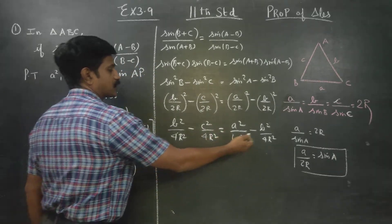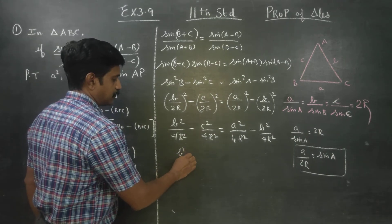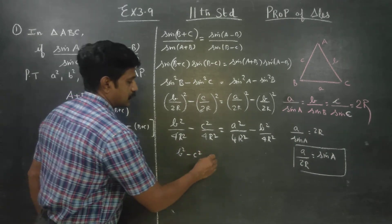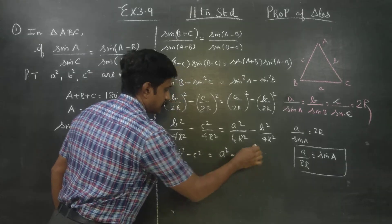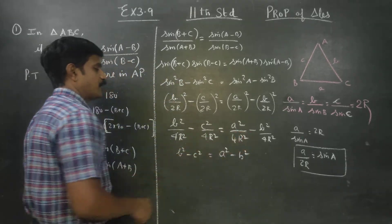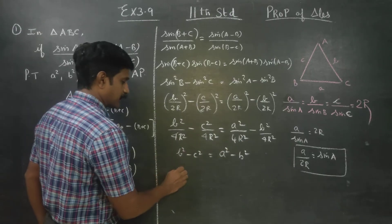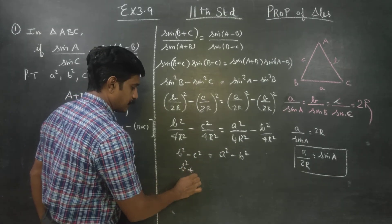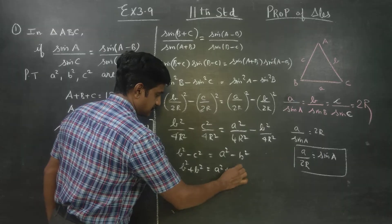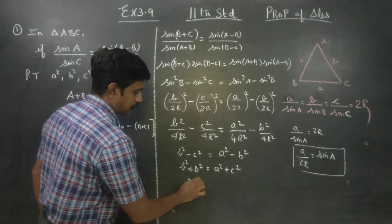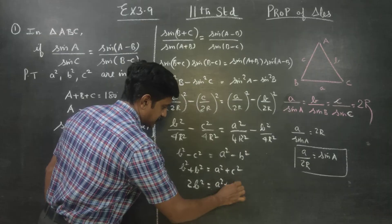Since 4R² is common and cancels, we get: a² − b² = b² − c², which gives a² + c² = 2b², or equivalently 2b² = a² + c².